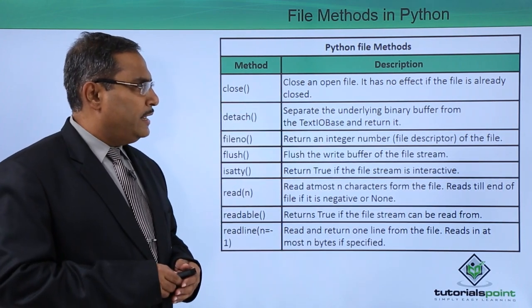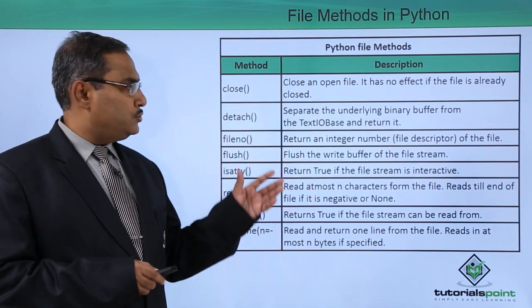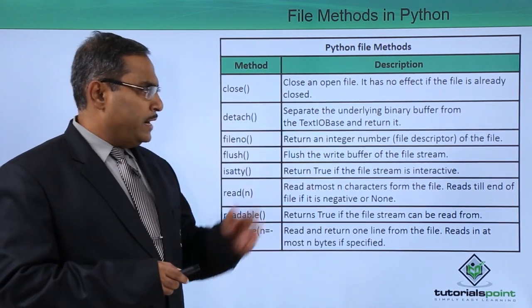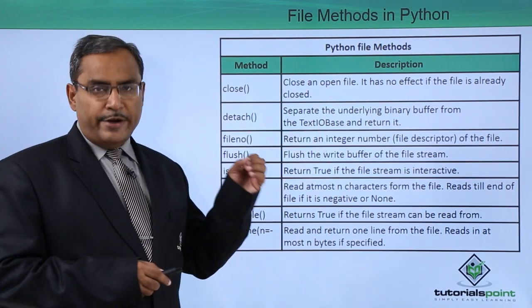Close - close an open file and it has no effect if the file is already closed. Detach - separate the underlying binary buffer from the text IO base and return it.